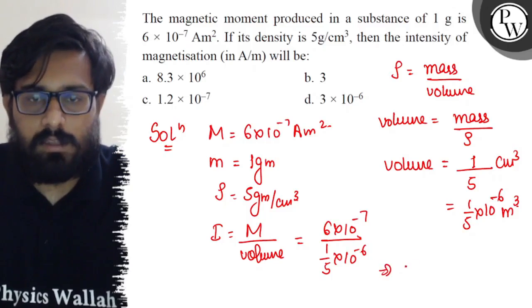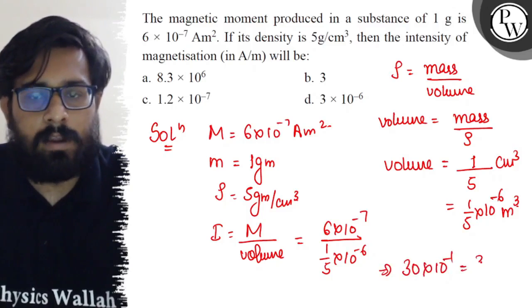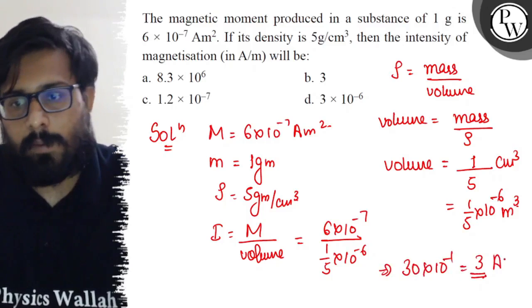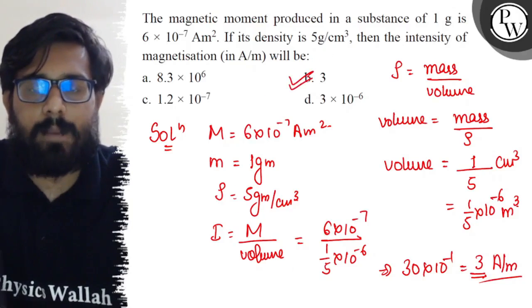Solving further, this becomes 30×10^-1, or simply 3 ampere per meter. So the intensity of magnetization is 3 ampere per meter, and option B is correct.